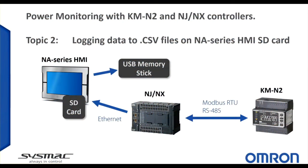Hello and welcome to this Omron Tech Talk. During this video we'll see how to use an NA Series HMI to collect and data log power consumption readings from an NJ or NX Series machine controller connected to a KMN2 power monitor. The data log CSV files will be stored on an SD card plugged into the HMI, which the end user can then copy onto a USB memory stick plugged into the HMI at any time.